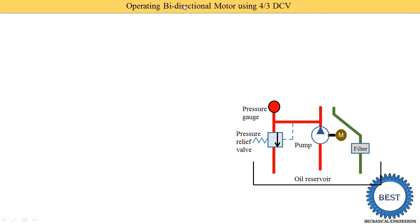First, let's understand what the 4x3 DCV means — that is, three positions are possible: one is extend, the second one is stop, and the third one is retract. For that, we need to change the oil supplied to the bidirectional motor.